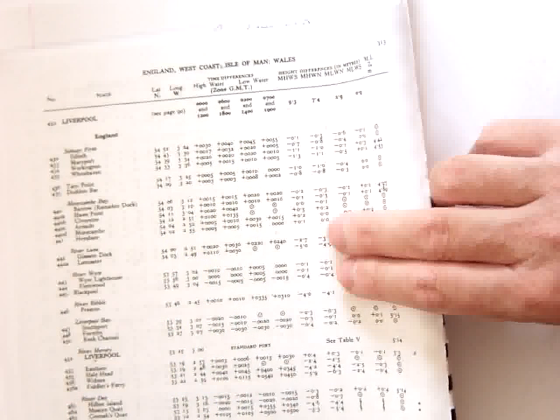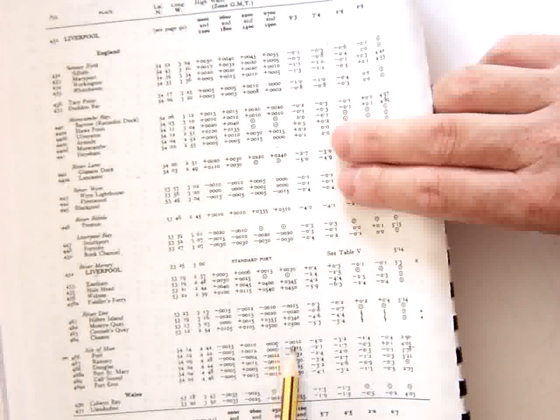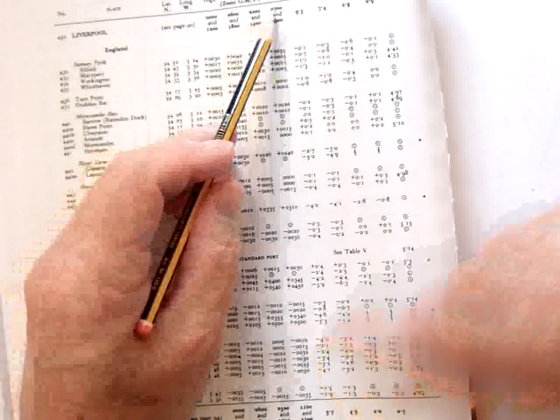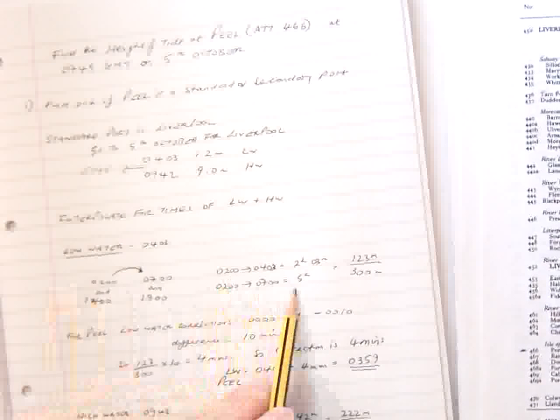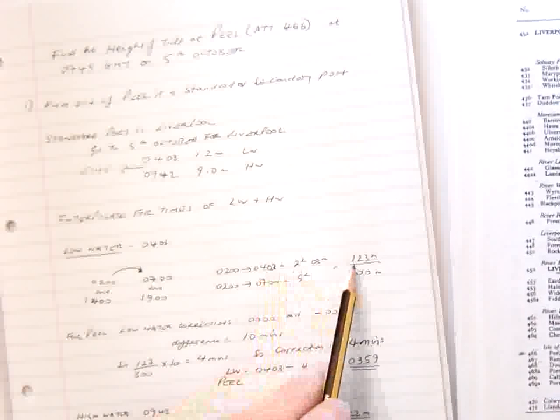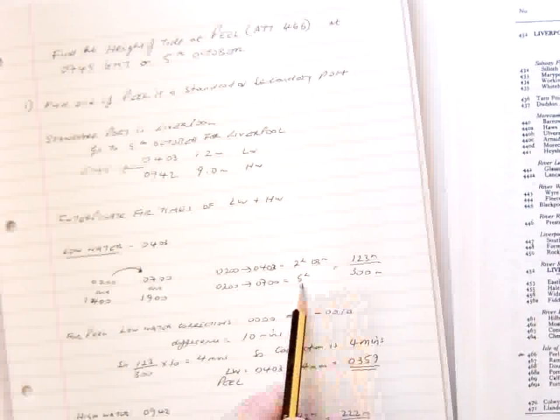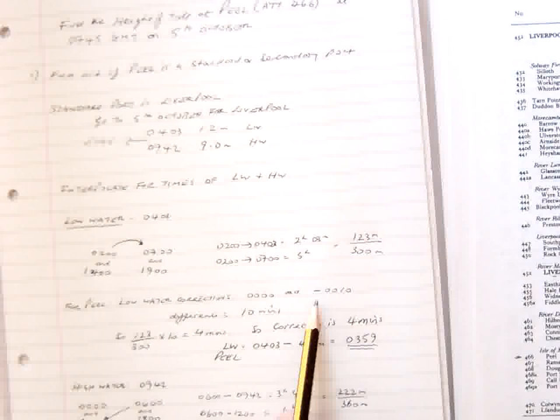And similarly, for our correction for low water, we're between 0 and minus 10 minutes, because 0 and minus 10 minutes are between 0200 and 0700. So we write down here, 0200 to 0700. So 0200 to 0700 is 5 hours. 0200 to 0403 is 2 hours 03. So that's 123 minutes over 5 times 60 minutes is 300 minutes. For Peel, the low water corrections, as we looked at, were 0 and minus 10. The difference between those two is 10 minutes.